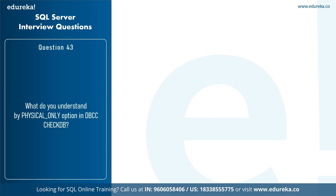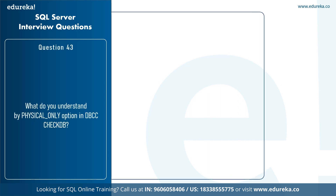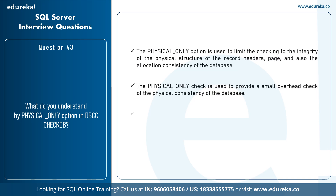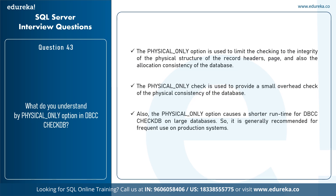The next question is: what do you understand by the PHYSICAL_ONLY option in DBCC CHECKDB? The PHYSICAL_ONLY option limits checking to the integrity of the physical structure of record headers, pages, and the allocation consistency of the database. It provides a small overhead check of physical consistency and results in a shorter runtime for DBCC CHECKDB on large databases. It is generally recommended for frequent use on production systems.